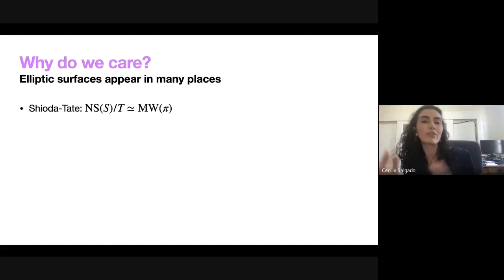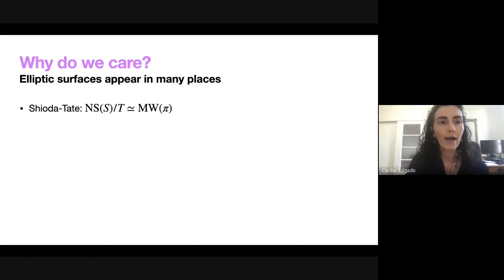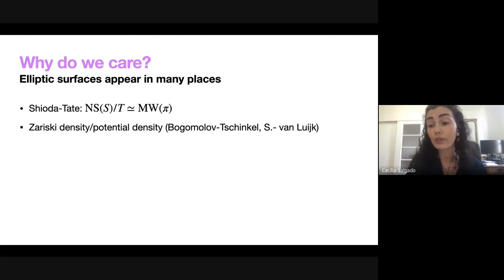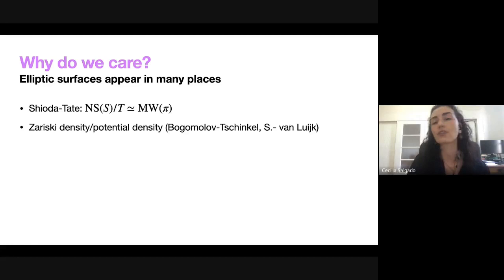For number theory, elliptic surfaces have been used extensively. For example, in the work of Bogomolov–Tschinkel they are used to deal with K3 surfaces, and in my work with Fang–Loughran we use them to deal with del Pezzo surfaces of degree one. Many others use them for potential density of K-points on surfaces — for instance, Serre and Darmon if I'm not mistaken use elliptic fibrations on K3 surfaces.